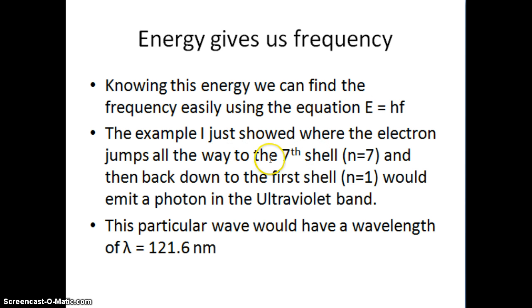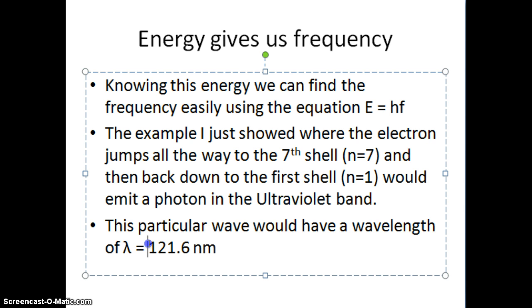In this case, we had a hydrogen atom, the electron went up to the seventh shell, and then dropped down to the lowest first shell. And that would give us a wavelength of 121 nanometers, which turns out to be ultraviolet light. If it had jumped up to a different energy level or fallen down to a different energy level, we would get different light. Let's look at one more example of this before we go on.